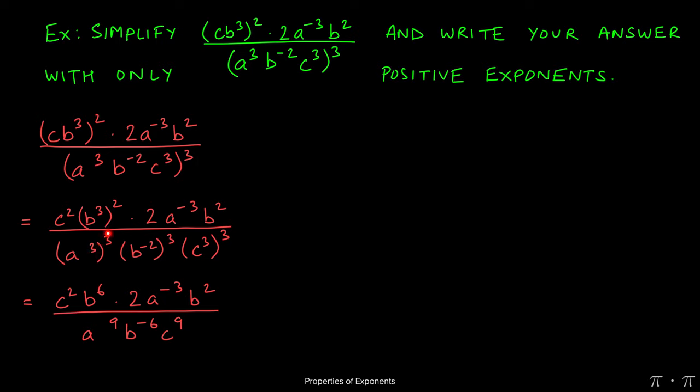a cubed raised to the third, we multiply the threes together and we get nine. b to the negative two times three gives us b to the negative six. And then c cubed cubed gives us c to the ninth. Three times three is nine.